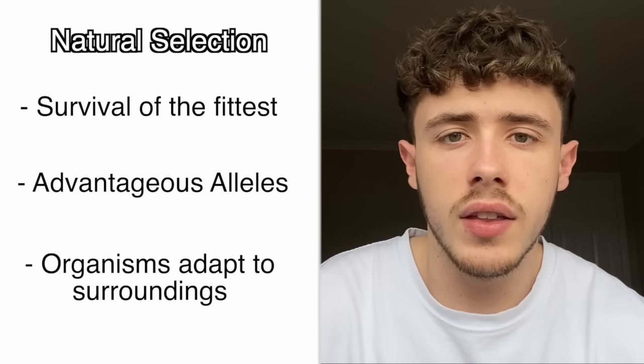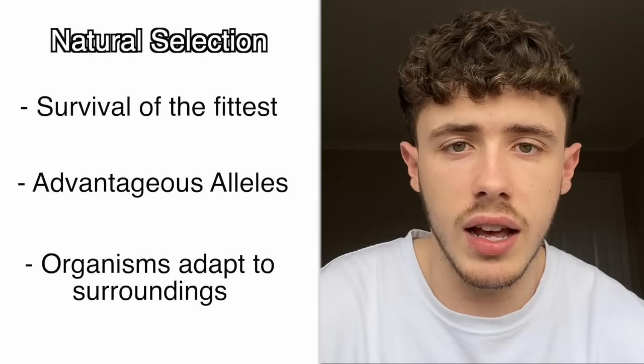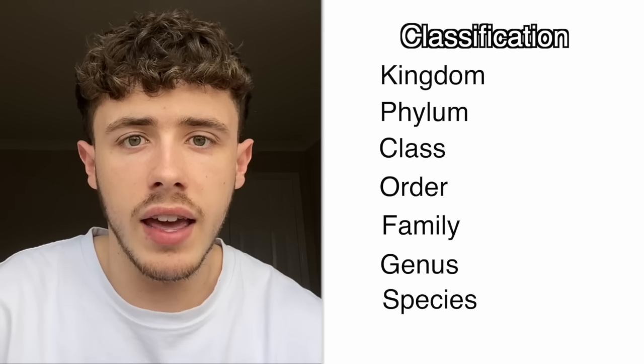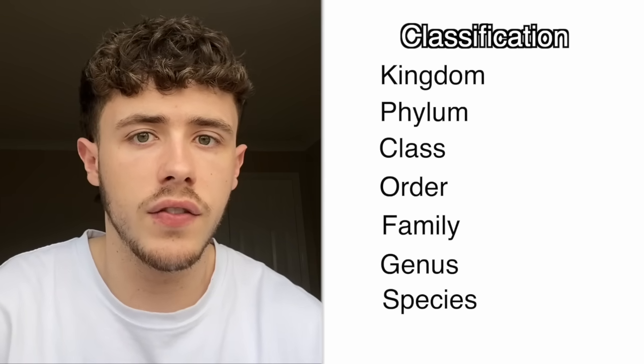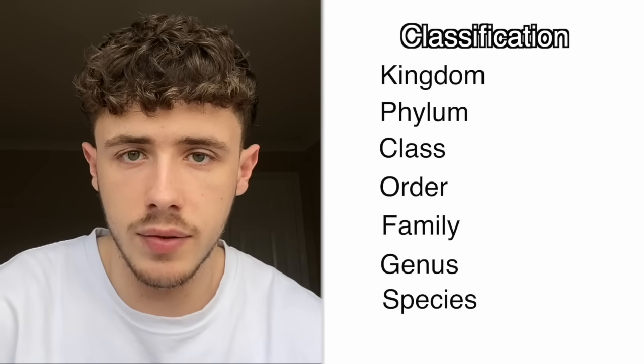Finally, we have Darwin's theory of evolution — this is the idea of natural selection. A small part of this topic that is also important is the classification of organisms. All you need to know about is these seven words: kingdom, phylum, class, order, family, genus, species. This is how different species are classified and how their ancestors can be identified.